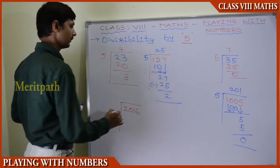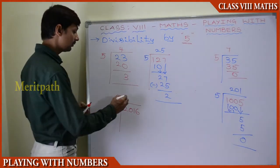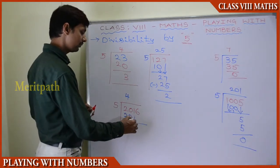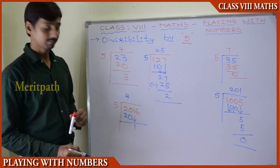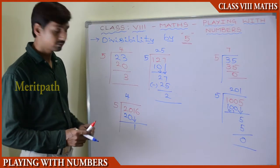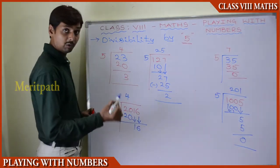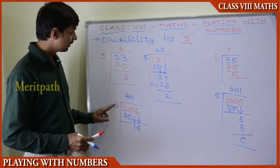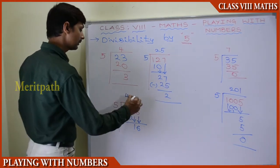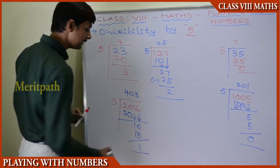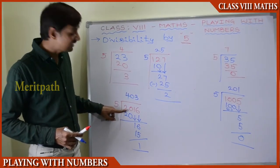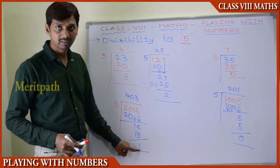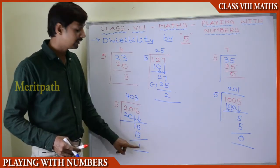Let us take 2,016 and divide by 5. 5 goes 4 times into 20, giving 20. Bring down the next digits; 5 goes 3 times into 16 giving 15, and after subtraction we get 1 as remainder. So 2,016 is not divisible by 5 because 1 is the remainder.